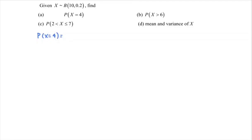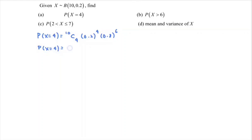For number one, we can make use of the formula: 10C4, multiplied by 0.2 to the power of 4, and then 0.8 to the power of 6, because 10 minus 4 equals 6. By referring to the calculator, the probability that X is equal to 4 will be equal to 0.0881.